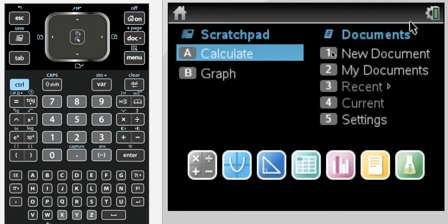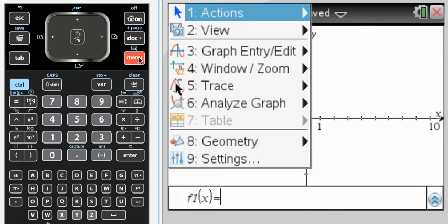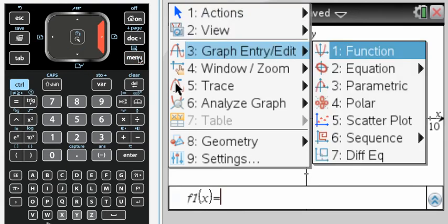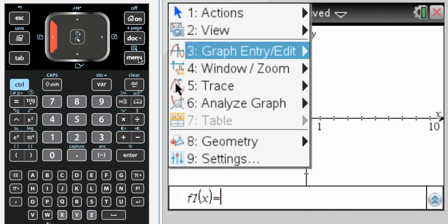Okay, so we just talked about, let me get a new document. We talked about conics from the Graph Entry Edit menu where they're hidden in equation, which is a little weird, but that's where they are.